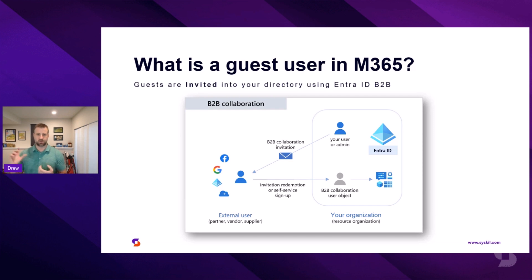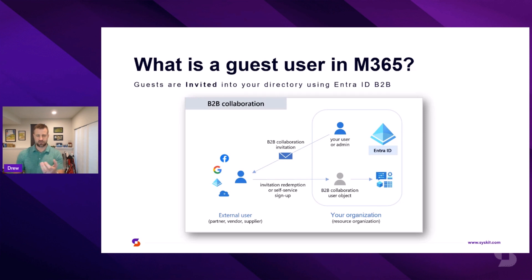Once that guest is invited, there's a redemption service that signs them up, and that's usually automatic. The person will redeem the invitation by clicking on a link, or by joining the team — that's the acceptance of that invitation, which then puts that user object back into your organizational directory. This is built around B2B — B2B collaboration is an Entra ID service called business to business, which supports the backend of external collaboration or guest user collaboration inside of Entra ID, expanding across M365 workspaces.